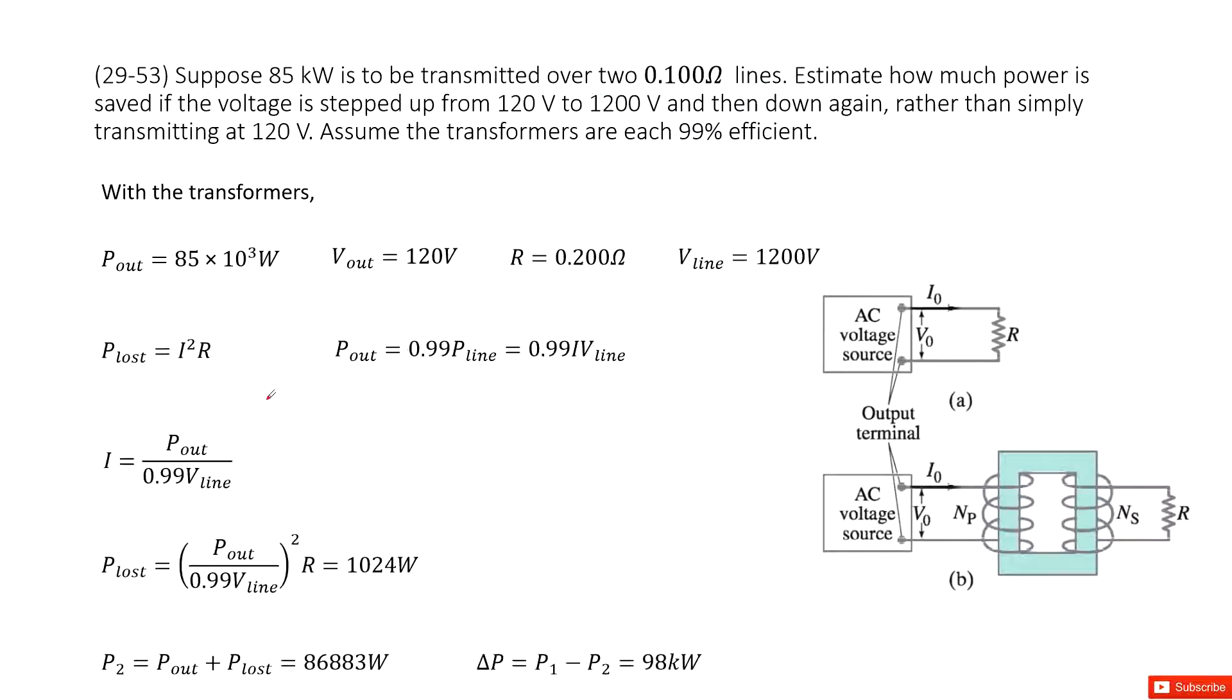The second one, we insert a transformer in between them. It tells us the transformer is 99% efficient. So that means the P_out equals 0.99 P_in.